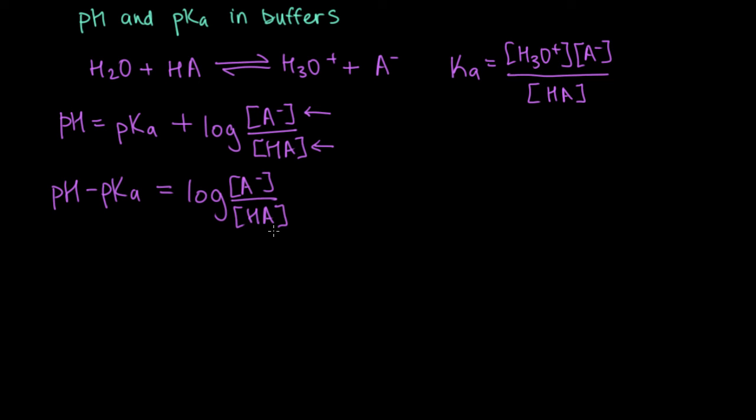And I don't know about you, but I actually find logs not super intuitive sometimes. So I'm actually going to get rid of the log by raising both sides to the 10th power. So that gives us 10 to the pH minus pKa is equal to A minus over HA.